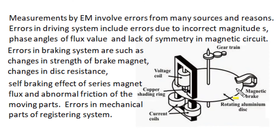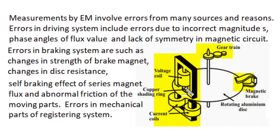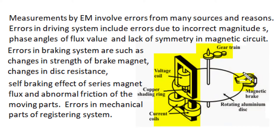Construction, design, and working of an energy meter has three different sections with many sources of error: the driving system, braking system, and registering system. In the driving system, error may be caused by incorrect magnitude and phase angle of magnetic field from voltage coil or current coil excitation, and distortion of magnetic flux or lack of symmetry in the magnetic circuit. In the braking mechanism, there could be changes in strength of the brake magnetic field and changes in disk resistance.